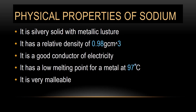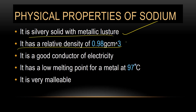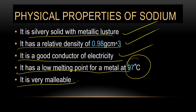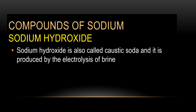Physical properties of sodium: it is silvery white with a metallic lustre. It has a density of 0.98 g/cm³. It is a good conductor of electricity because it has free mobile valence electrons — that is one electron. It has a low melting point for a metal at 97°C. It is very malleable, meaning it can be hammered or shaped.